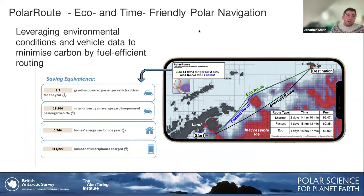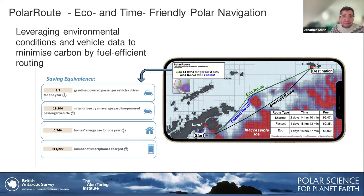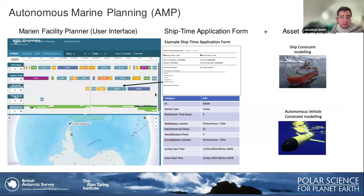We're now operationalising polar route planning on the bridge of the Sir David Attenborough. For a transit around the Antarctic Peninsula taking about one day and 18 hours, taking the eco-friendly route increases transit time by only 14 minutes but saves almost 4% carbon. That equates to the same as running a petrol-powered car for almost two years — an insane saving for only 14 minutes extra transit time.